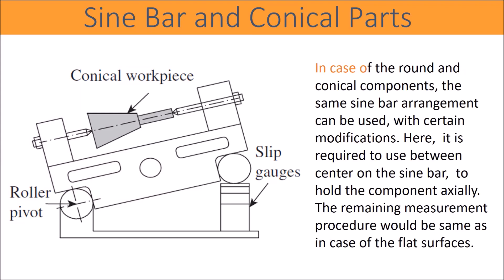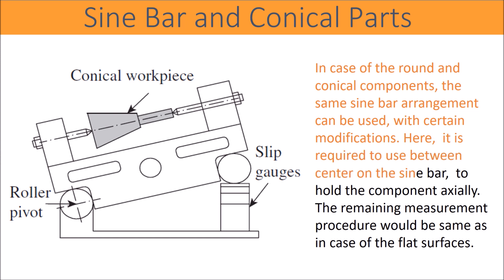In case of round and conical components, the same sine bar arrangement can be used with certain modifications. It is required to use between-centers on the sine bar to hold the component axially. The remaining measurement procedure would be the same as in the case of flat surfaces.